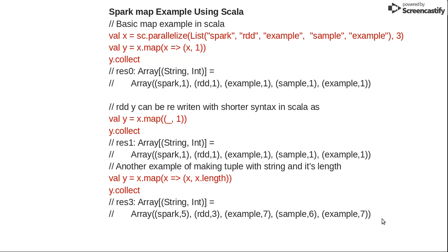Now a few examples of map and flatMap. In this example I'm creating an RDD over a list — you need not have a Hadoop cluster; you can create an RDD over a list or data structure as well. I have a list of elements: spark, rdd, example, sample, and example. sc.parallelize is the syntax for creating an RDD from a collection, and comma 3 means break the data into three partitions.